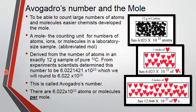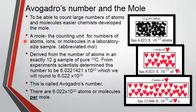To count large numbers of atoms and molecules more easily, chemists developed the unit of the mole. Atoms are so small they're really hard to count individually, and we need a way to figure out how much chemical we need in reactions and how much product we'll get out. So a mole is the counting unit for the number of atoms, ions, or molecules in a laboratory-sized sample. We abbreviate it 'mol' — we just drop the E.